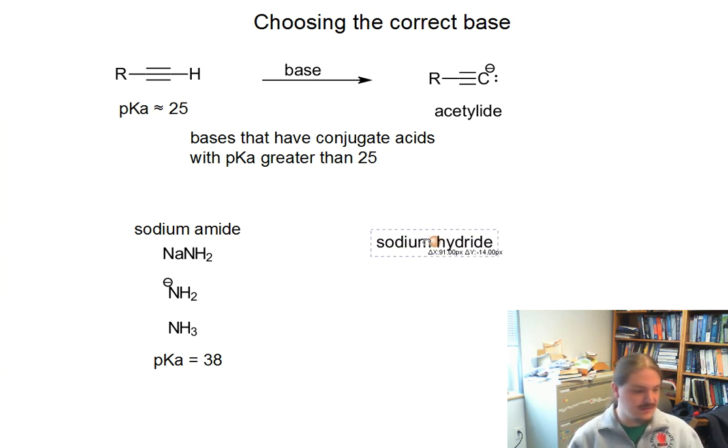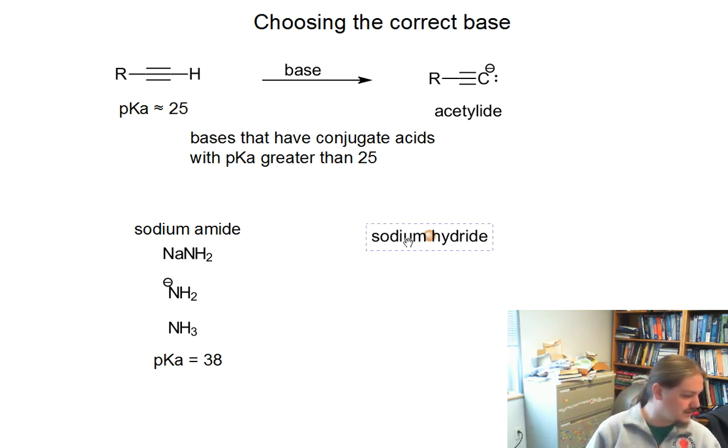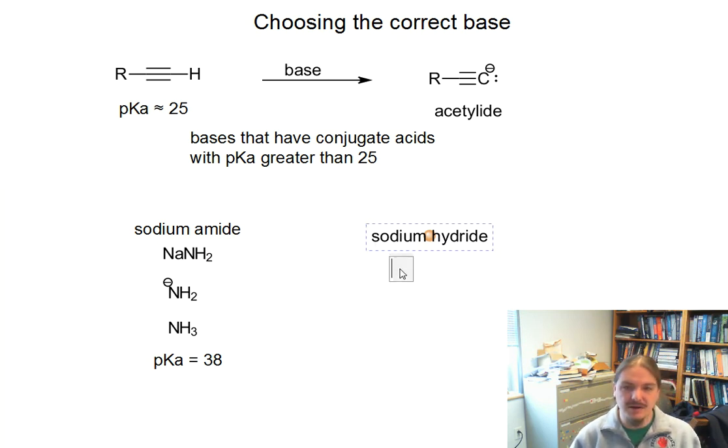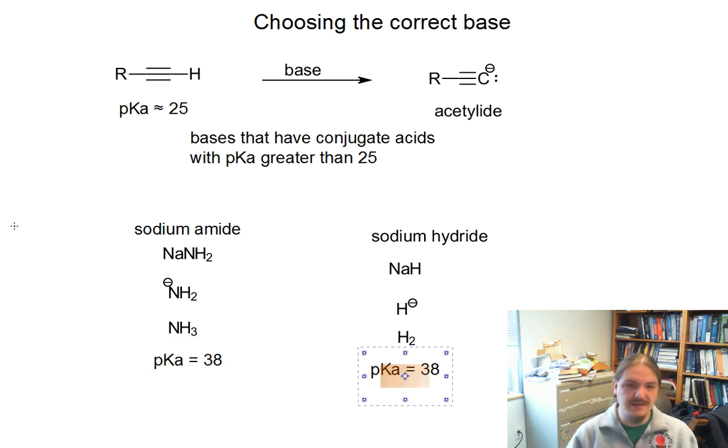You might also see sodium hydride as a good base to deprotonate terminal alkynes. Sodium hydride has the formula NaH, and so this actually contains the H minus anion. We're normally more used to the H plus cation, but you can certainly have H minus anions. The conjugate acid of H minus is H2, hydrogen gas, and the pKa of hydrogen gas is 36.